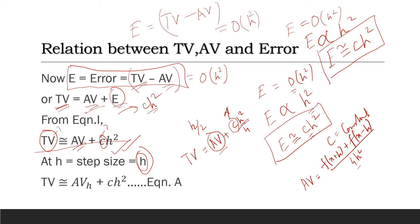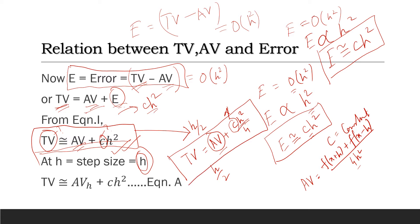Now if we look for a lower step size — a more refined step size — that is H by 2, this equation can be written similarly. Instead of H, you put H by 2, so C H squared becomes C H squared by 4. And now you can multiply to get: 4 T equals 4 times the approximate value at H/2 plus C H squared. This is one equation, and the earlier one at step size H is another equation.